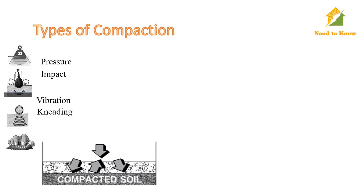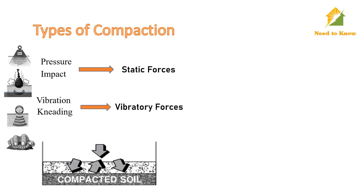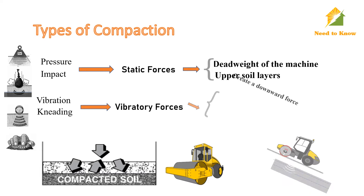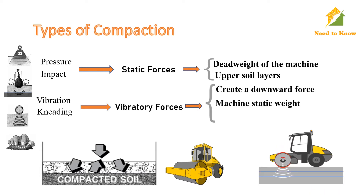These different types of effort are found in the two principal types of compaction forces: static forces and vibratory forces. Static force is simply the dead weight of the machine applying a downward force on the soil surface. Static compaction is confined to upper soil layers and is limited to any appreciable depth. The vibratory force uses a mechanism, usually engine-driven, to create a downward force in addition to the machine's static weight. The compactors deliver a rapid sequence of blows to the surface, thereby affecting the top layers as well as the deeper layers.